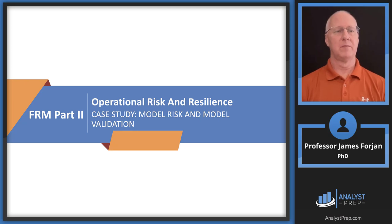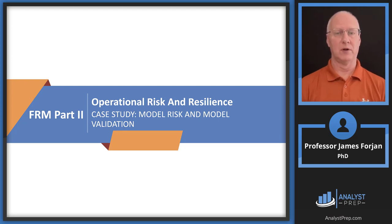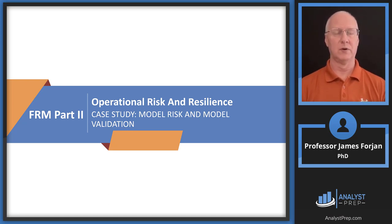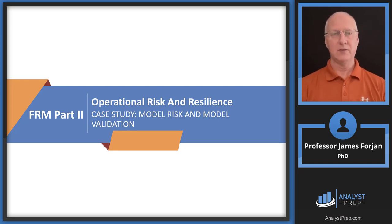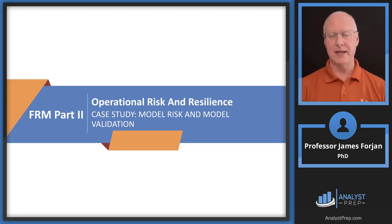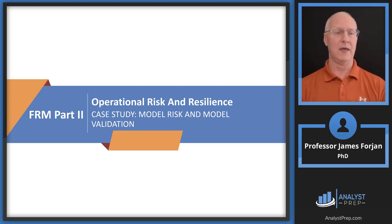Hey, it's Jim and this is FRM Part 2, the topic on operational risk and resilience and the chapter on case study model risk and model validation. Our previous chapter was called something like guidance on model risk management, and one of those learning objectives was to identify the best model, apply it in the most efficient way, and interpret results leading to some kind of estimation or prediction. In this particular chapter we're focusing on the fact that we've already identified the model we're going to use, and then we need to figure out the level of risk and how to validate it.